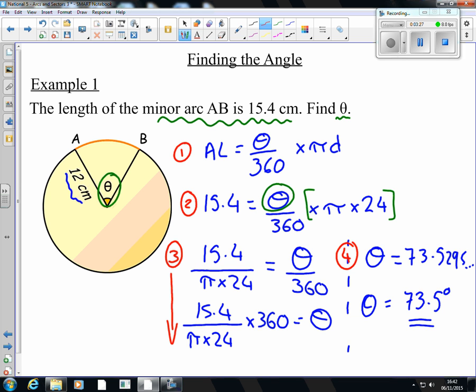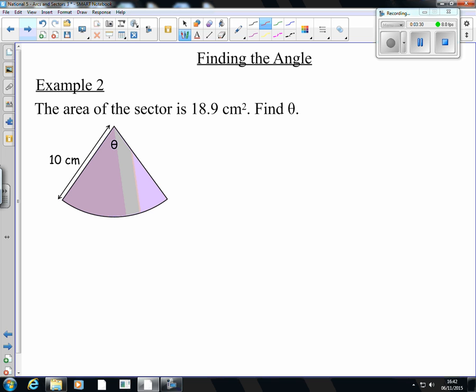Now, we've got another example to look at. This time we're given the area of the sector. So we're told what the area is and we're looking to find that angle again. So step one, we'll get our formula down.